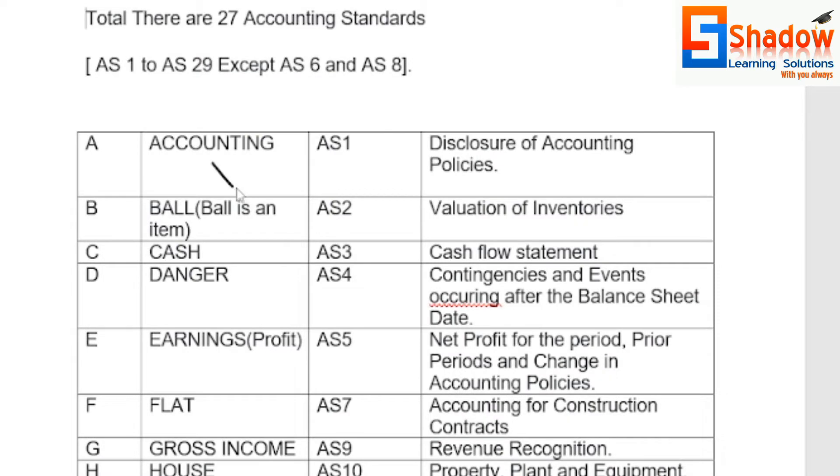These are 27 active accounting standards. From an exam point of view, these accounting standards are very important. We have 29 accounting standards in total, and we are going to start learning them. A for Accounting — AS1, Disclosure of Accounting Policy.